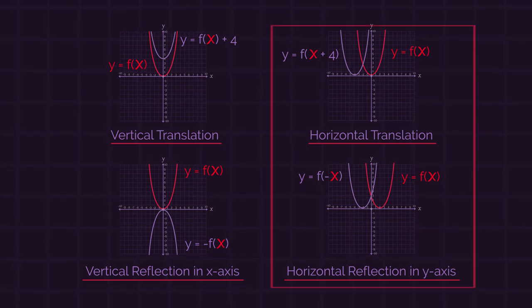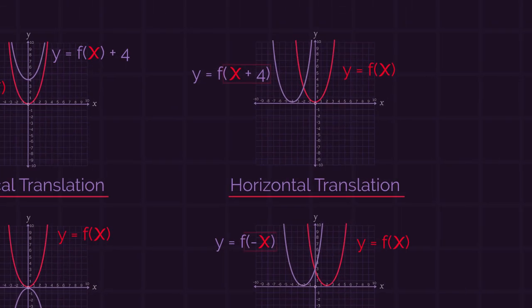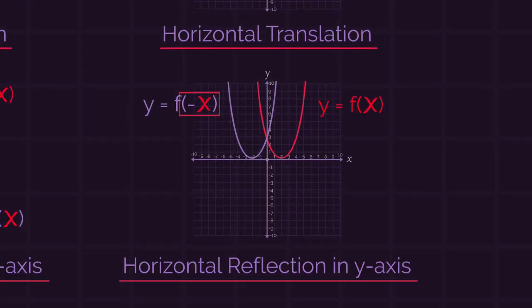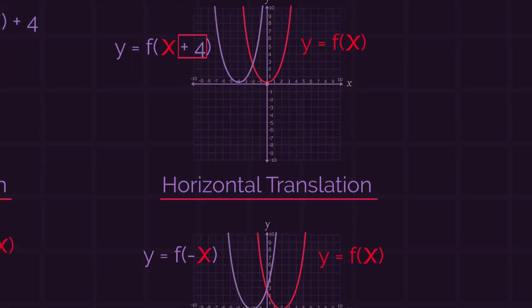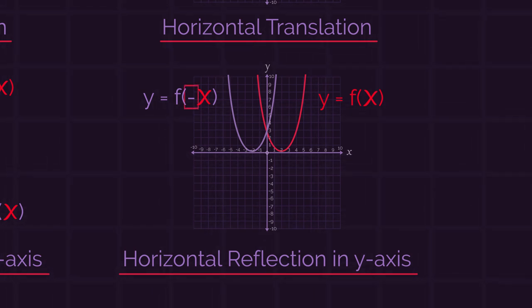But for the horizontal transformations, we add the numbers or negative directly to the x's. So the plus four here, and the negative here for reflecting.